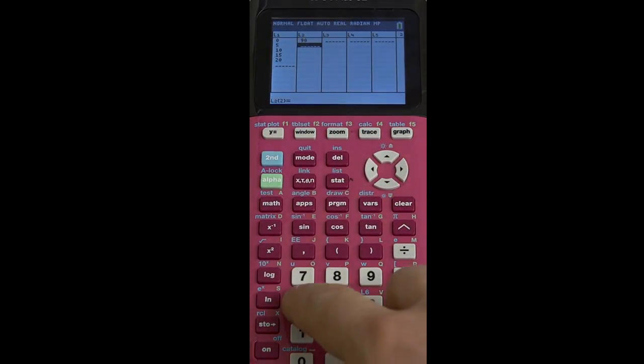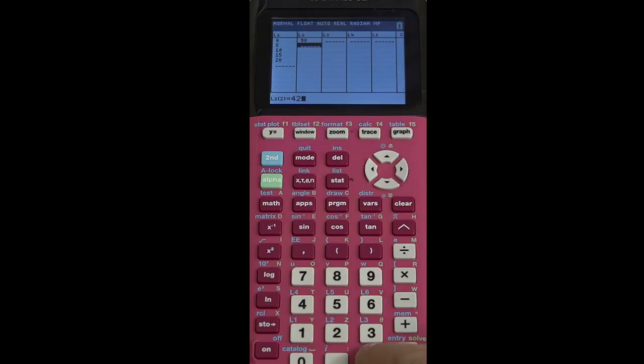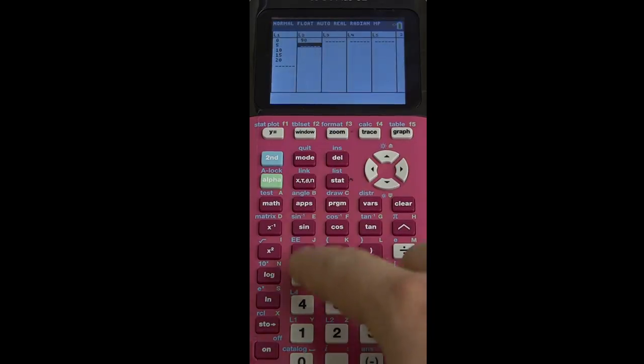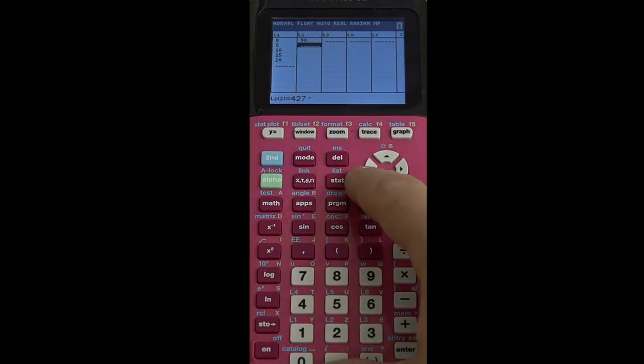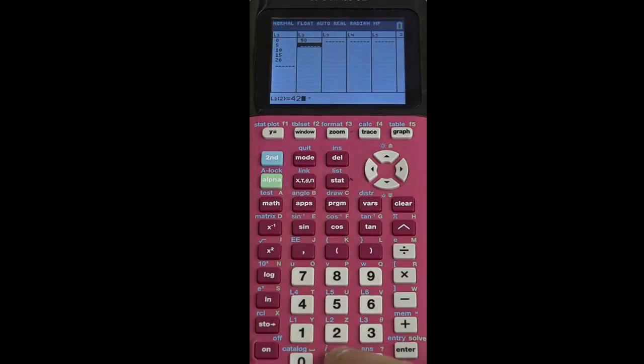And I'm going to move over, and for my y values, I'm going to put in 90, 42.9, 27.5, 22.5, and 20.8. And so now I've got as many y values as I have x values, something that the calculator will flip out about if you don't do that. And I want to see them. So I press graph.